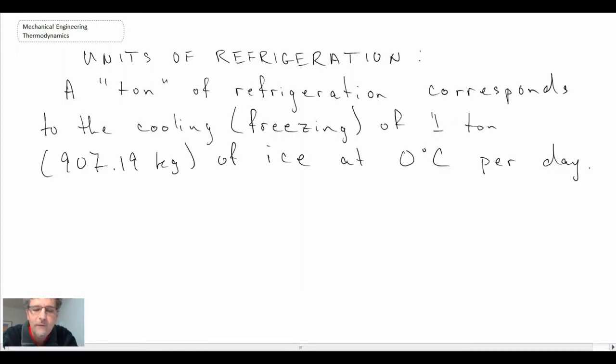A ton of refrigeration corresponds to freezing 907 kilograms of water at zero degrees C into ice at zero degrees C per day. So it's going through the phase change process, and that is what we refer to as being a ton. If you're buying an air conditioner for a house, quite often they'll say it's two or three tons, and that's what they're referring to.